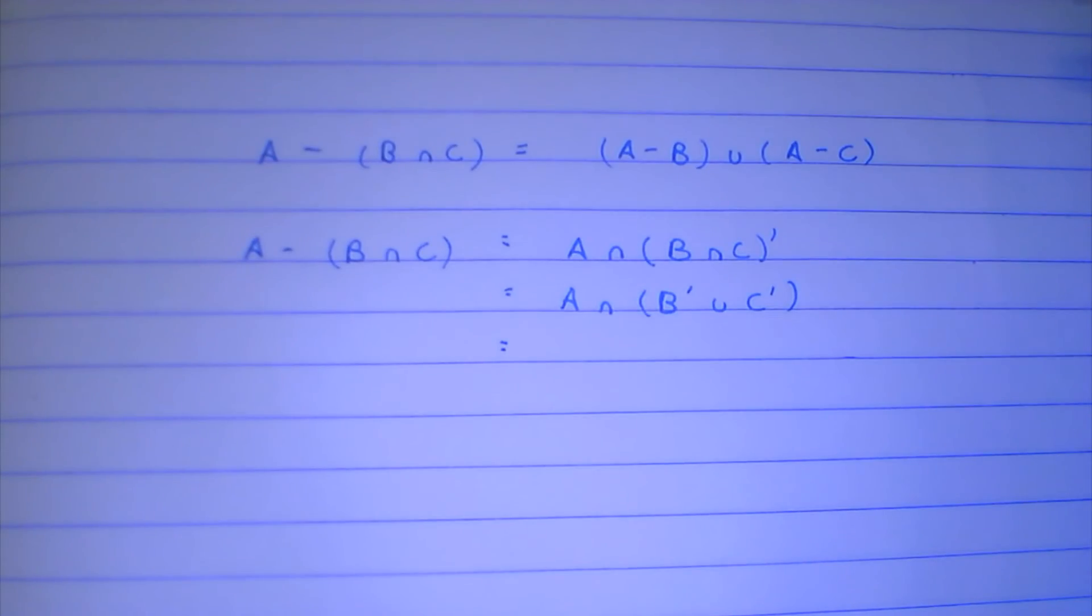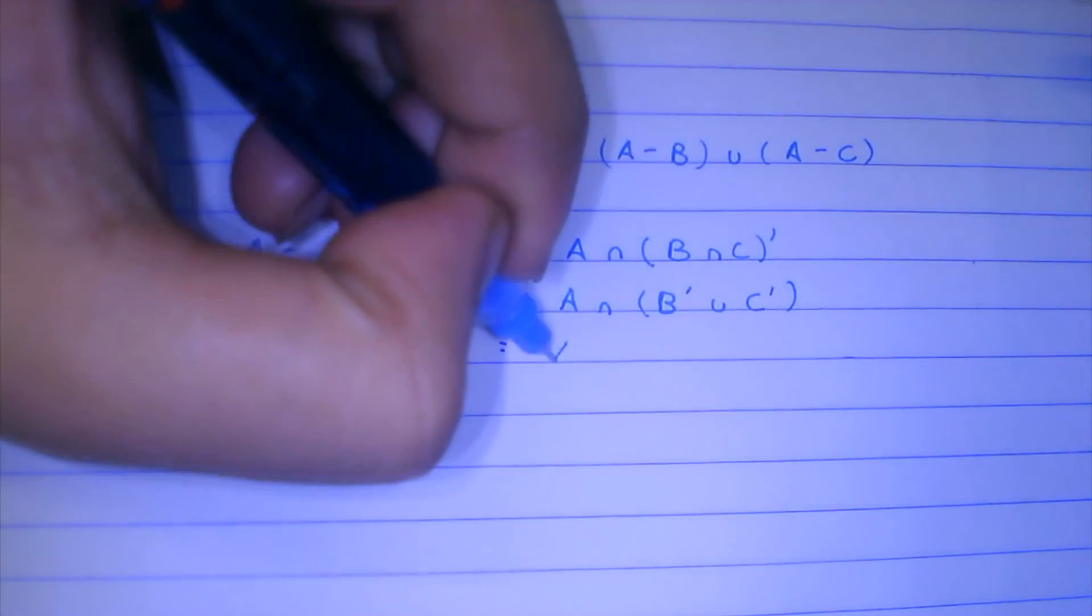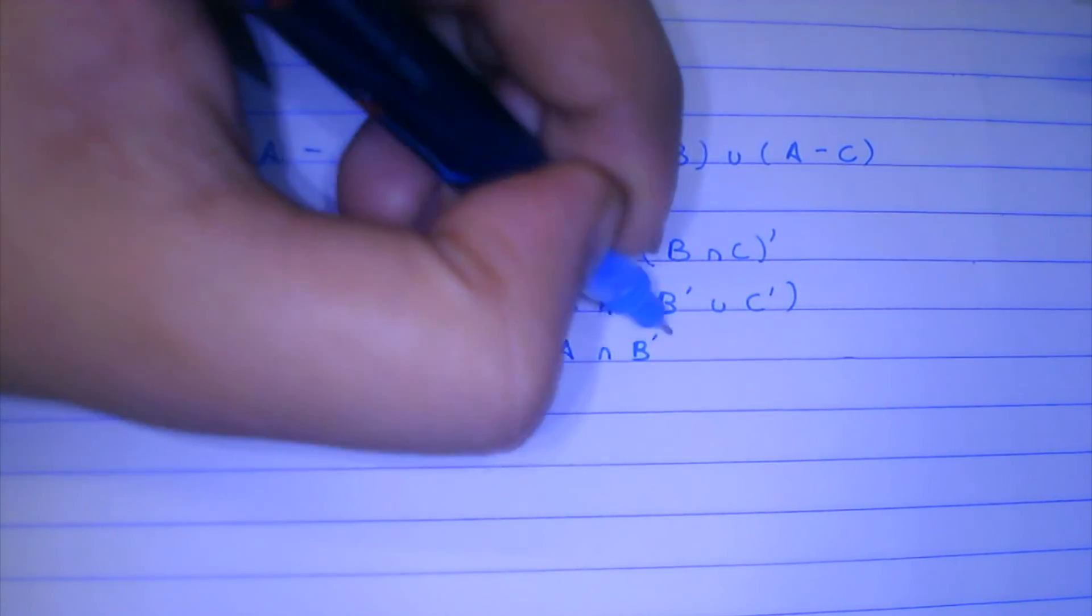And further going, using the distributive law we proved earlier just now, it's (A intersection B complement) union (A intersection C complement).